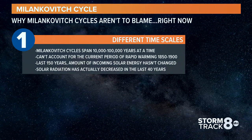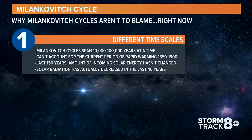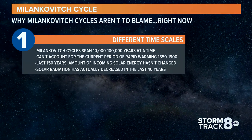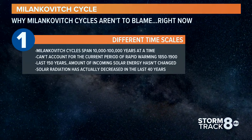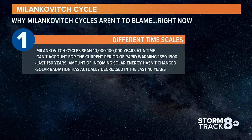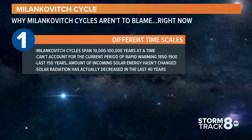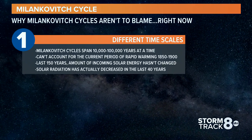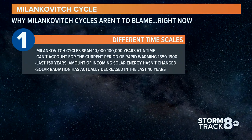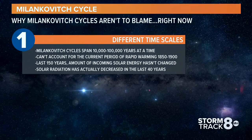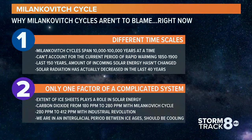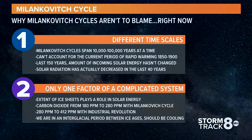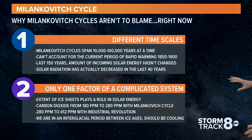So here's why we can't blame the Milankovitch cycle right now in terms of our warming. The Milankovitch cycles are 10,000 to 100,000 years at a time — that doesn't account for the current period of rapid warming in the last 100 years, say 1850 to 1900. Over the last 150 years, we've also realized that the amount of incoming energy from the sun hasn't changed. So while we can't discard this entirely, it does play some role — it's only one factor of a very complicated system.